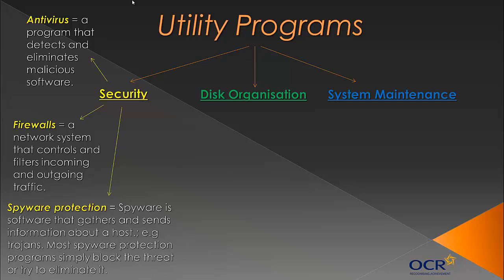Spyware is a type of software that gathers and sends information about you. If spyware is on your computer, it will gather information like your passwords — you might have a keylogger that records whatever you type — and send it to a hacker who can use it against you. An example of spyware is a Trojan. Most spyware protection programs simply block the threat, as it's difficult to eliminate them entirely. It's easiest to block them by preventing download or stopping them from doing anything too dangerous.